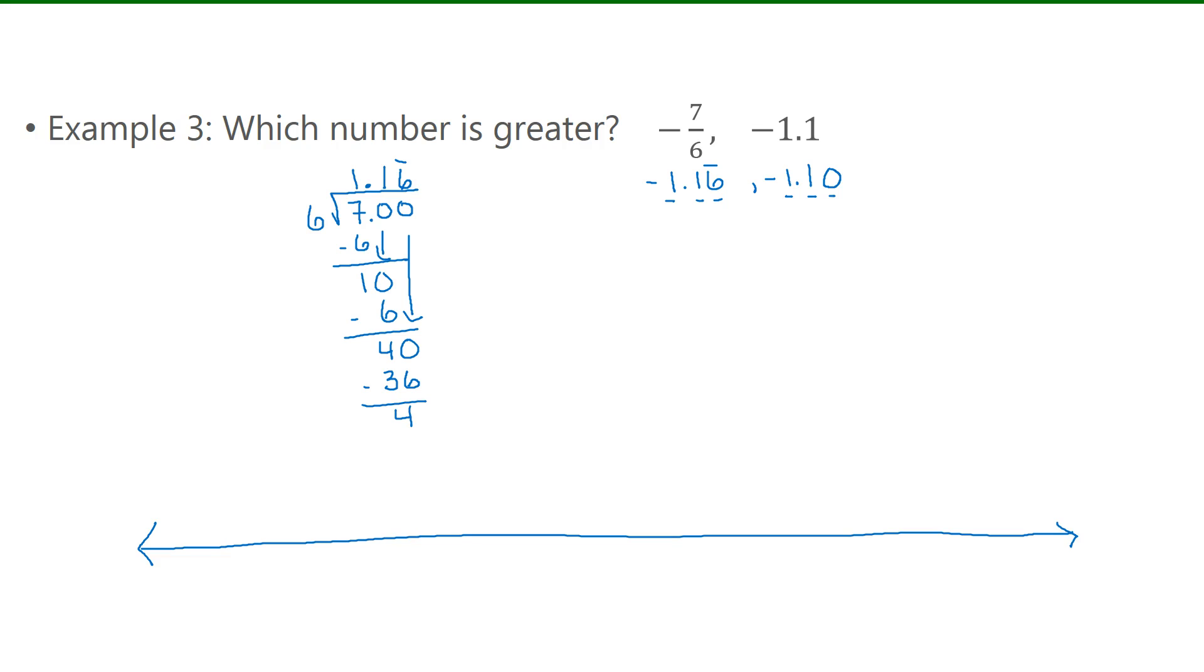So I'm going to break my number line into hundredths. Negative 1.10, negative 1.11, negative 1.12, and so on. I am going to stop when I get to negative 1.17. So that's big enough there now. So negative 1.1 is here on the number line,